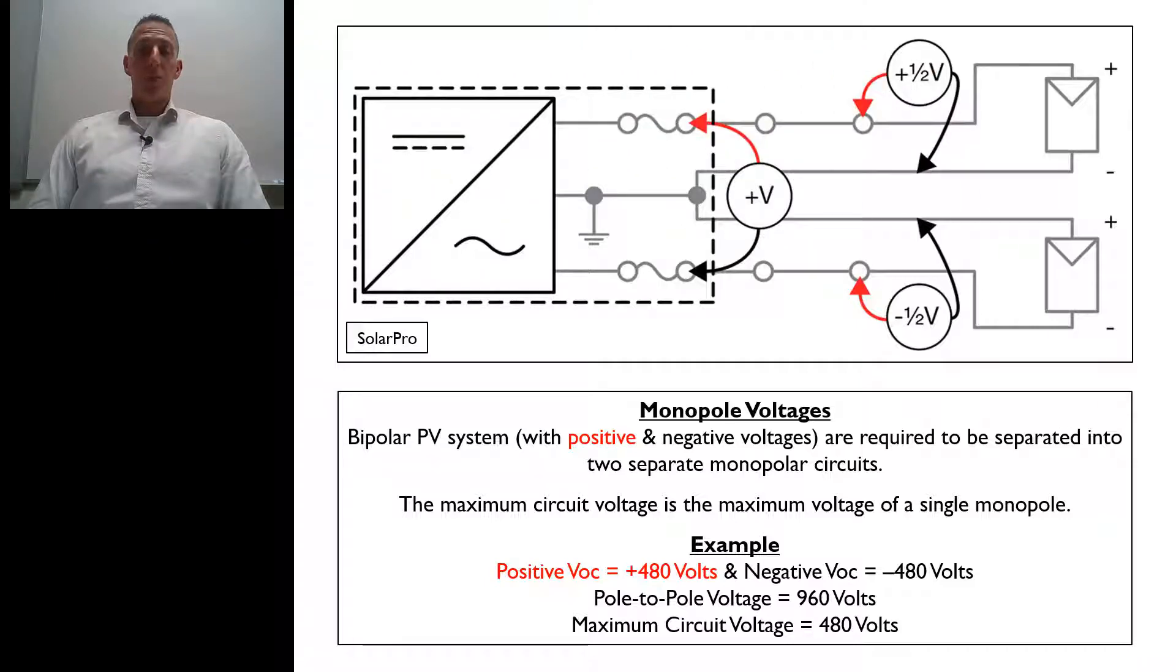To provide a little more information and get a little bit more in depth about how we're going to look at these voltages and the requirements of 690.7c of the 2017 National Electrical Code, I want to illustrate and show you what those monopole and the total bipolar voltage would look like. Bipolar PV systems with positive and negative voltages are required to be separated into two separate monopole or monopolar circuits.